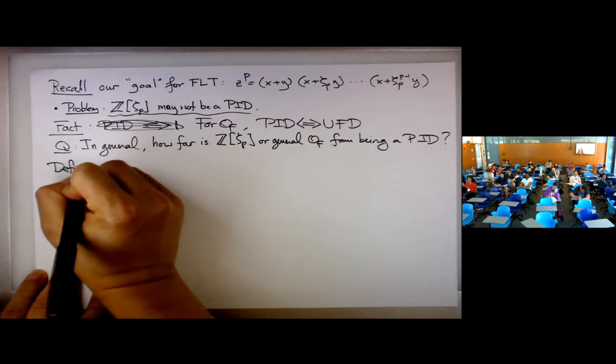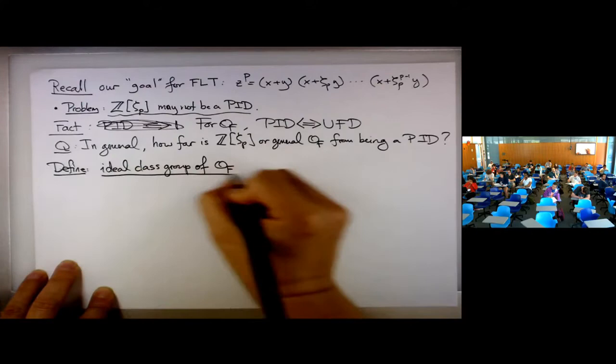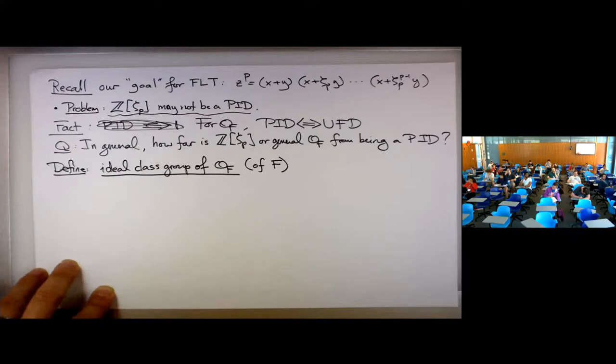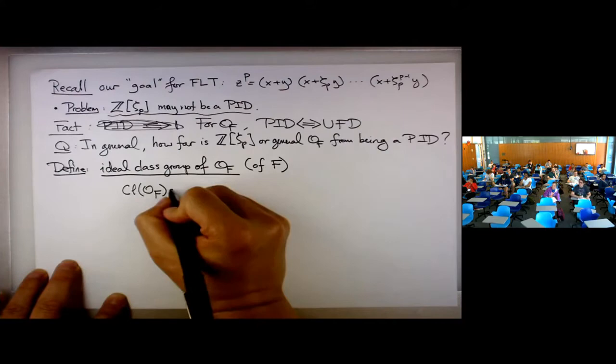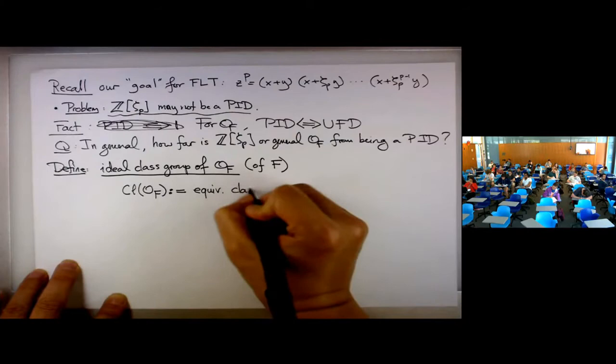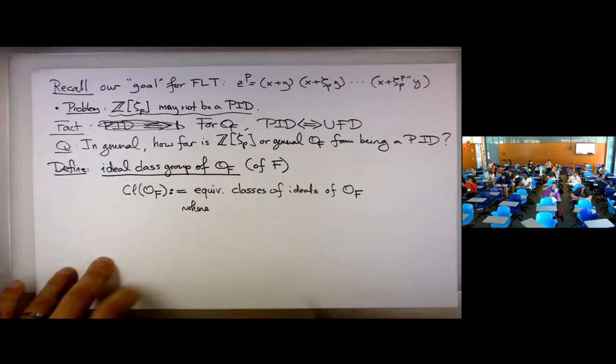For this, we introduce something called the ideal class group. Some people write it as the ideal class group of F, but technically it should be the ideal class group of OF. Usually people write it Cl(OF), defined to be the equivalence classes of ideals of OF. We have to explain what equivalence means.